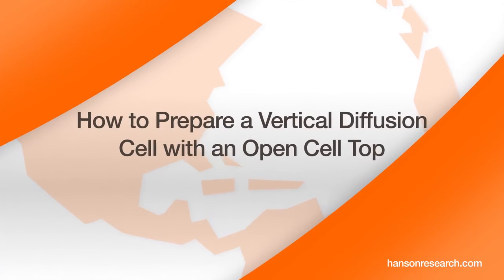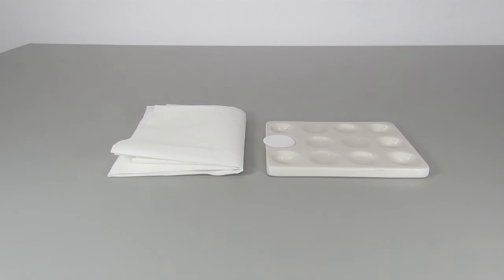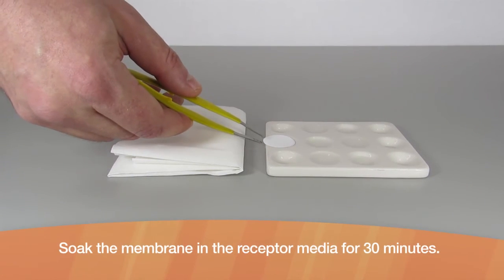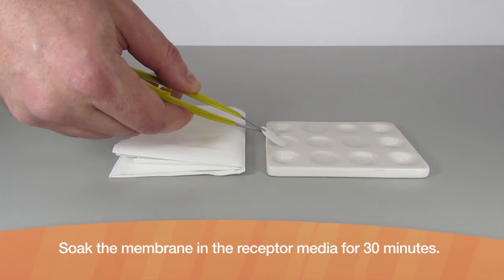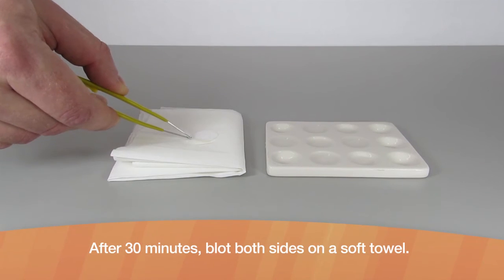How to prepare a vertical diffusion cell with an open cell top. Soak the membrane in the receptor media for 30 minutes. After 30 minutes, blot both sides on a soft towel.